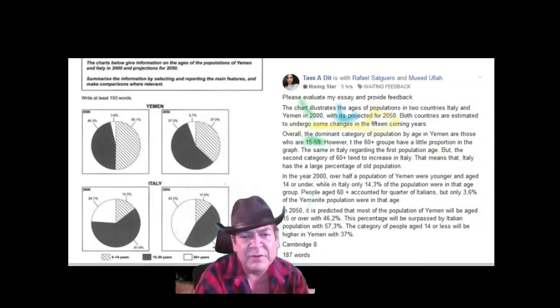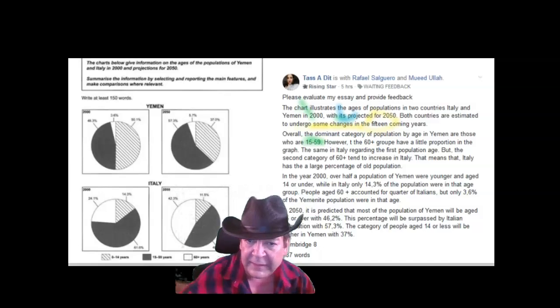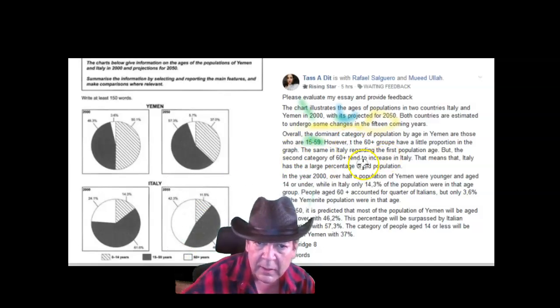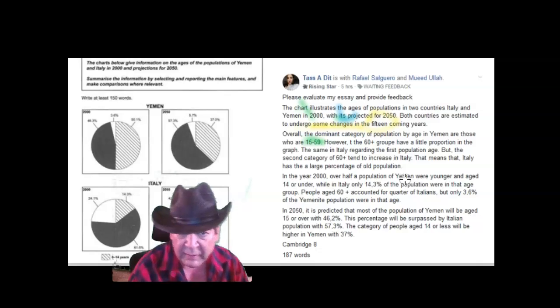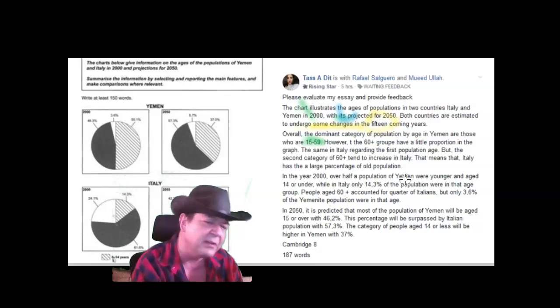However, don't use 'however' in task one. Well you can, but it's tricky. However, the 60-plus group with an E on the N for some reason have a little proportion in the graph. Same in Italy, regarding the first population age, but the second category tends to increase. Now it doesn't increase. It is larger in Italy. But that's not what the overview is for.